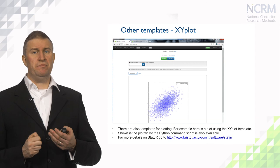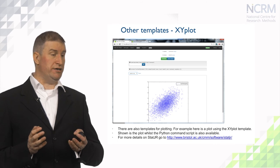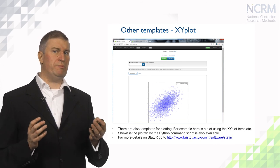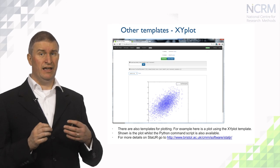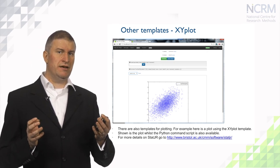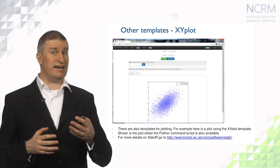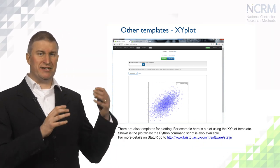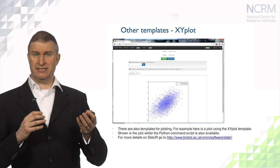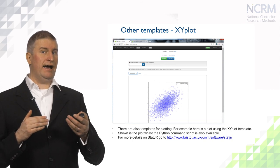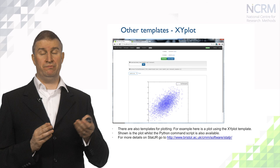Finally, Stature is written in Python and so can exploit Python's own functions, including via Python's matplotlib package some of the graphing functions that have been developed in matplotlib. Here we're going to use another template that comes with Stature which we have called xyplot, and it is used to create scatter plots of two variables. In the example we see here, I have chosen a test data set and chosen two variables — normalised exam and standardised LRT — and you will see the scatter plot of these two variables appears as an output in the browser window.